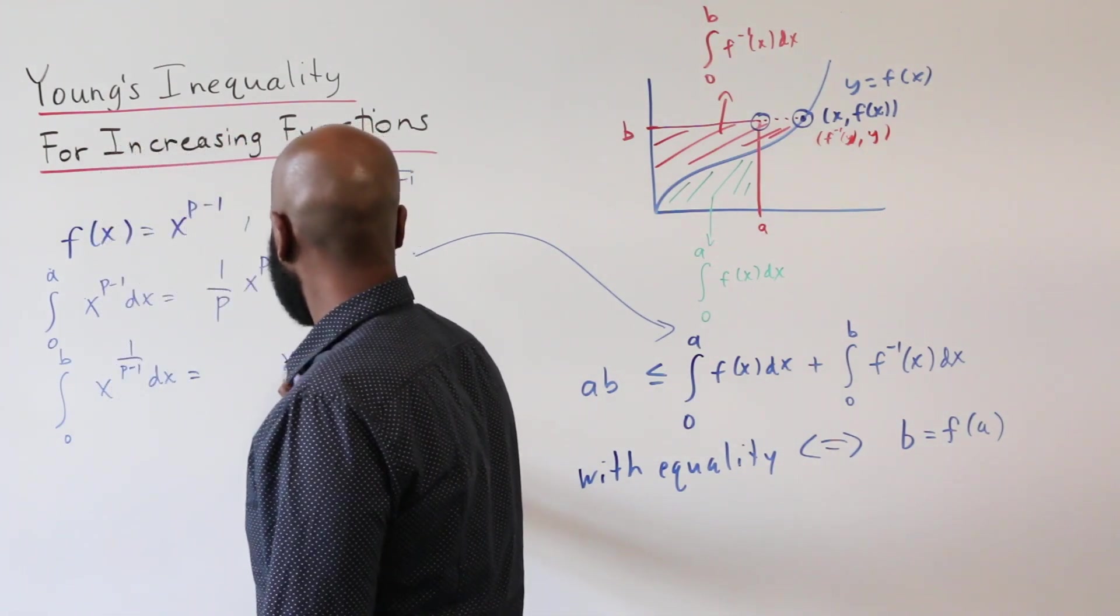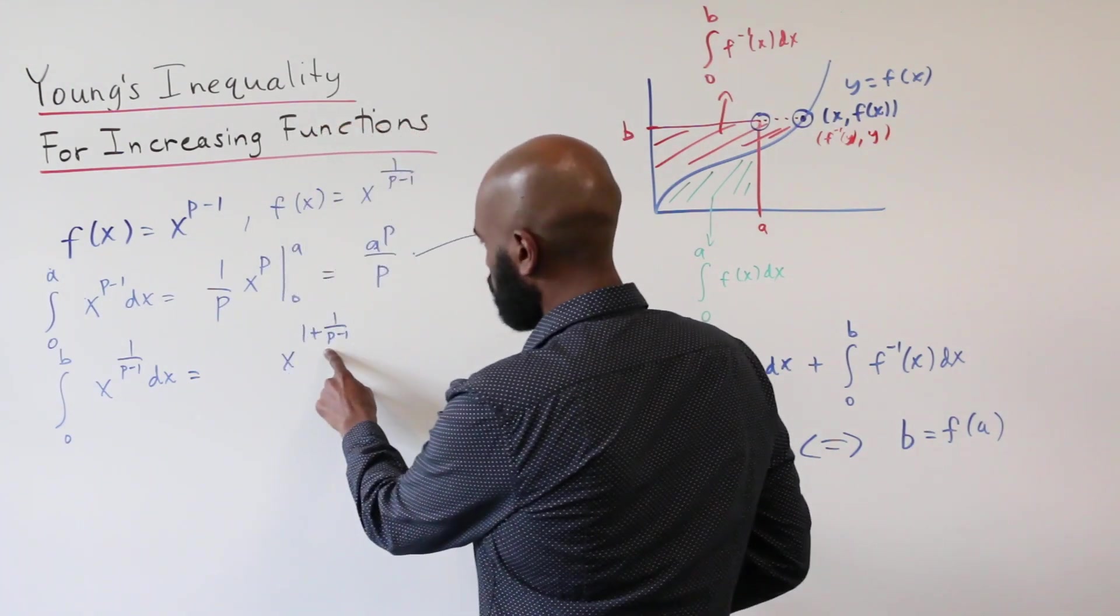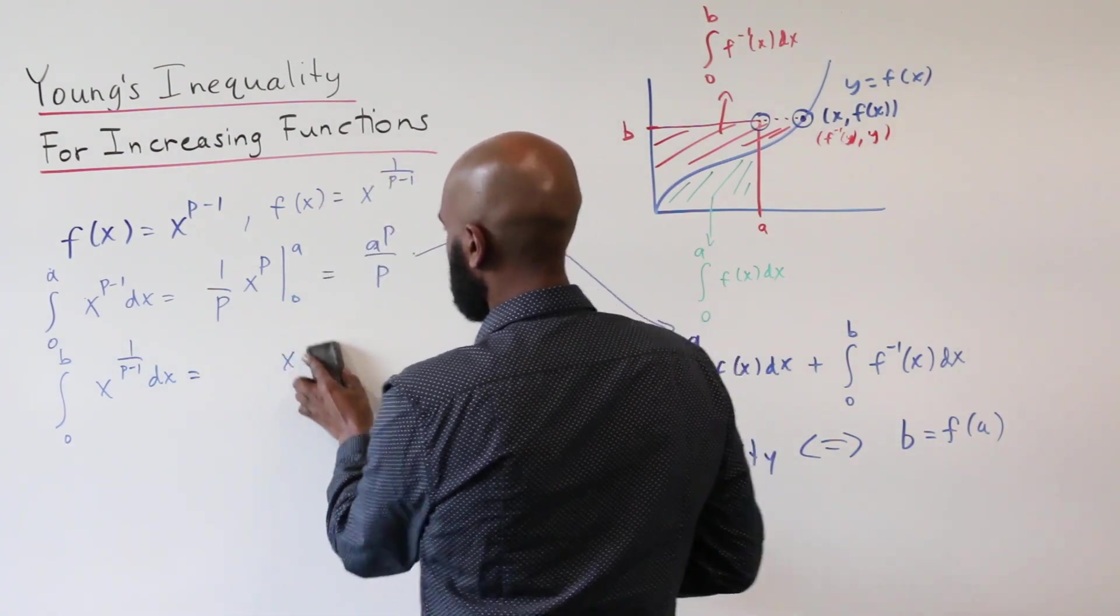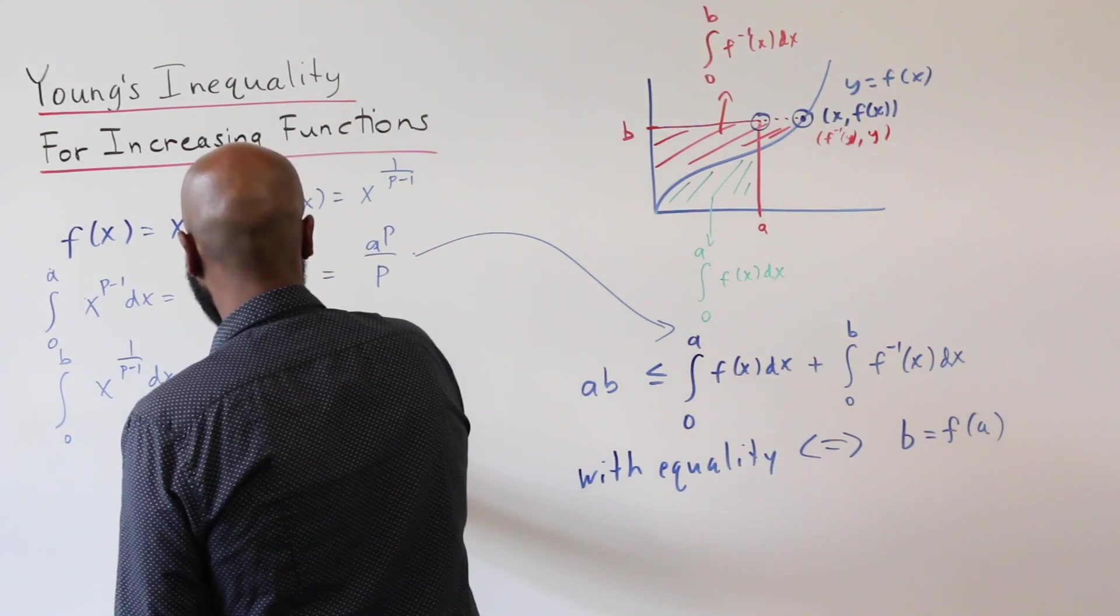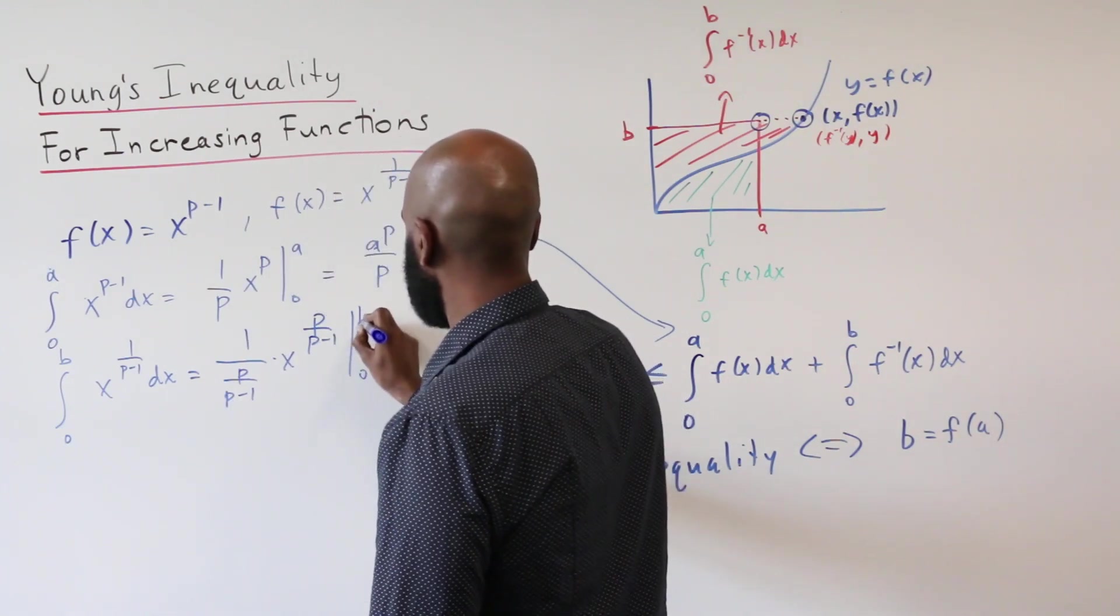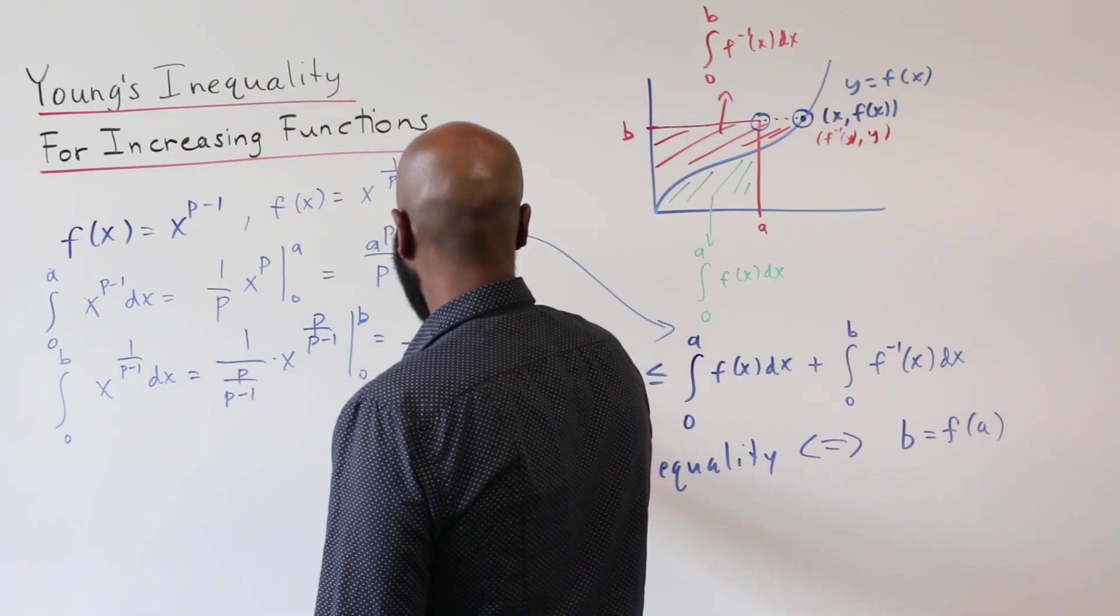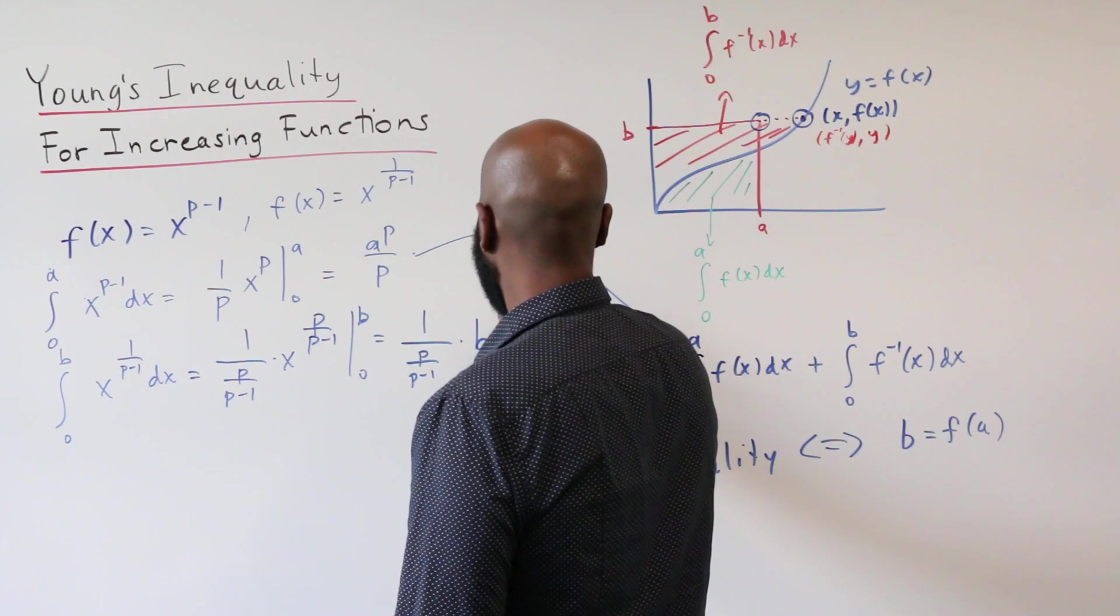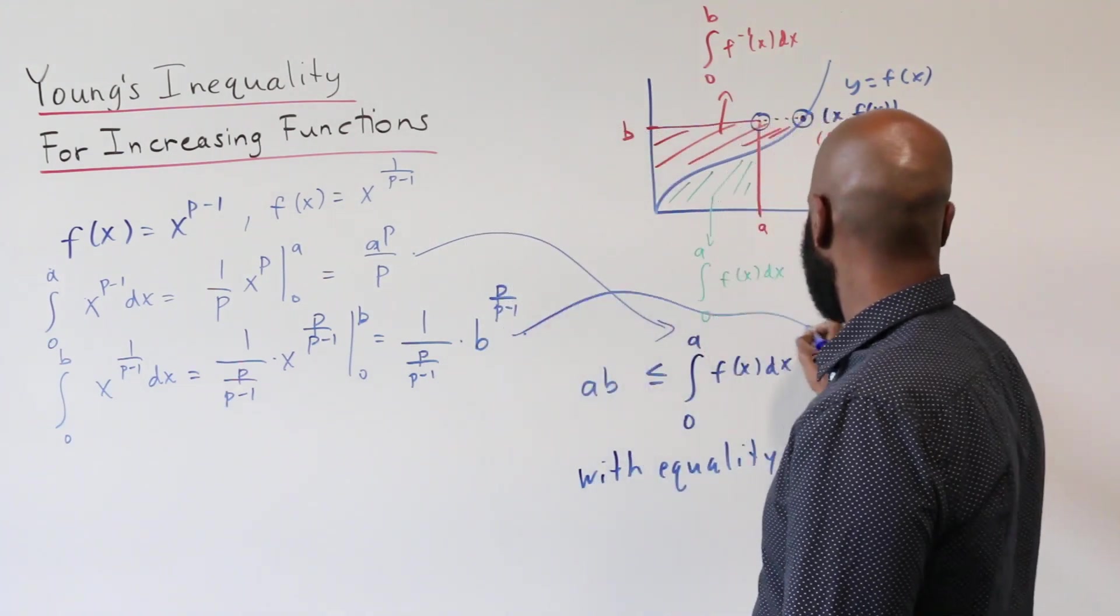This is x to the 1 plus 1 over p minus 1, which I'll simplify as p over p minus 1 times 1 over that exponent, evaluated from 0 to B. And so this is 1 over the quantity p over p minus 1 times B to the p over p minus 1. And so that is this quantity right here.